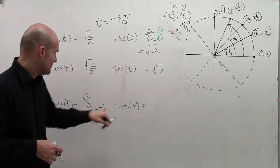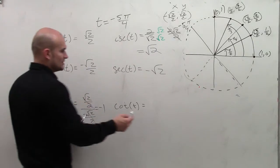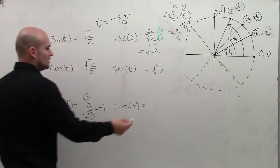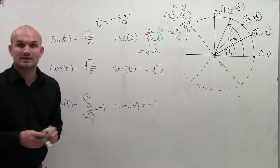And cotangent, remember, you're just doing the same thing. But now you're going to have negative square root of 2 over 2 over the square root of 2 over 2. So therefore, again, you'll also be left with negative 1.